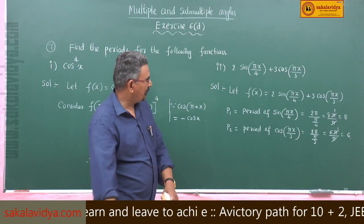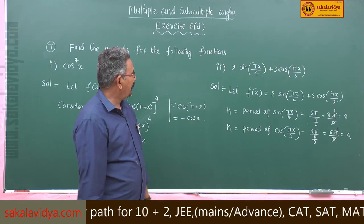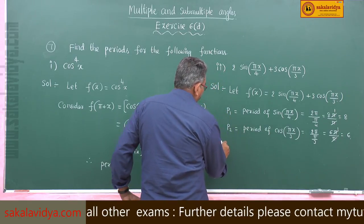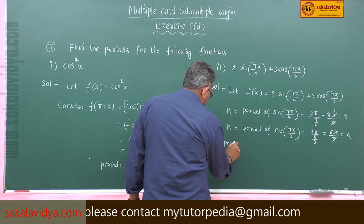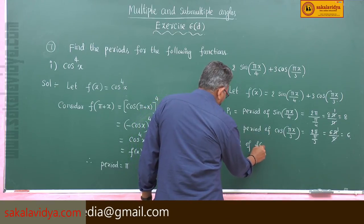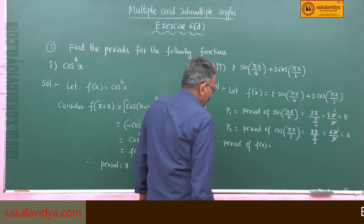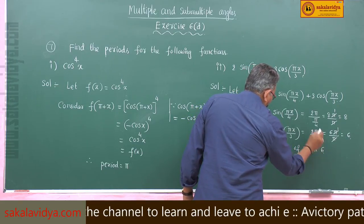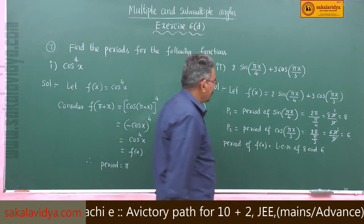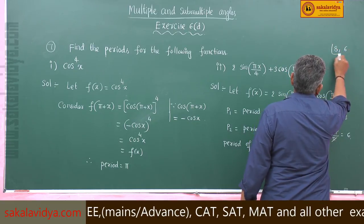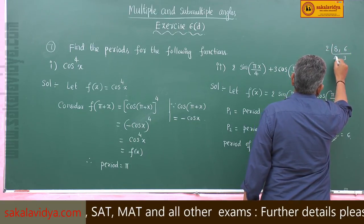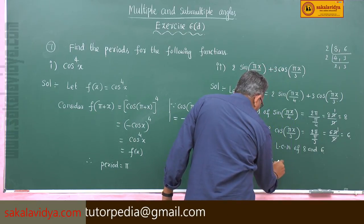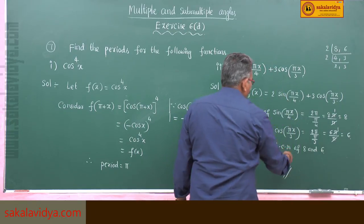Now what shall we do? We have to find the LCM of 8 and 6 in order to get the period of the given function. The period of f of x is equal to LCM of 8 and 6. Taking 8 and 6: 2 divides giving 4 and 3; 2 divides 4 giving 2; so LCM is 2 times 2 times 2 times 3, which is 24. Therefore, the period of this function is 24.